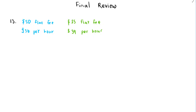Because we have a fixed amount and a constant rate per hour — the rate of change is not changing — we can represent both of these bills with a linear equation. Let's say C represents the cost for the service of fixing the sink.